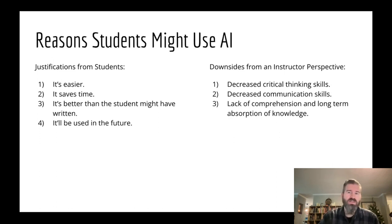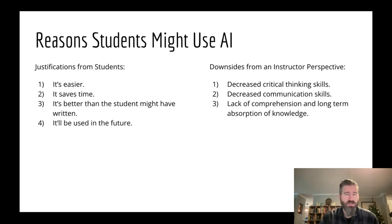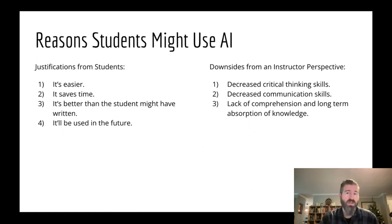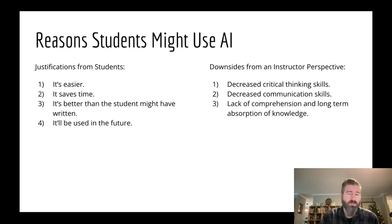The downsides from my perspective are that it decreases your critical thinking skills because you're not thinking through things. It's the same as going to Wikipedia and just using whatever's there. It decreases our ability to work on communication skills that are necessary in our world. In fact, one of the most sought-after skills that employers are looking for are communication skills. If you're using ChatGPT for essays, that transfers directly to emails, in-person communication, presentations, and things like that. It also creates a lack of comprehension and long-term absorption of knowledge — you can't retain things if you're not reading and writing. Those are psychologically proven effective ways for us to learn things.